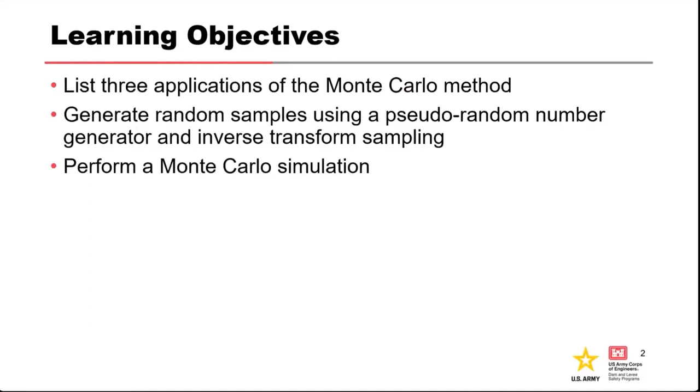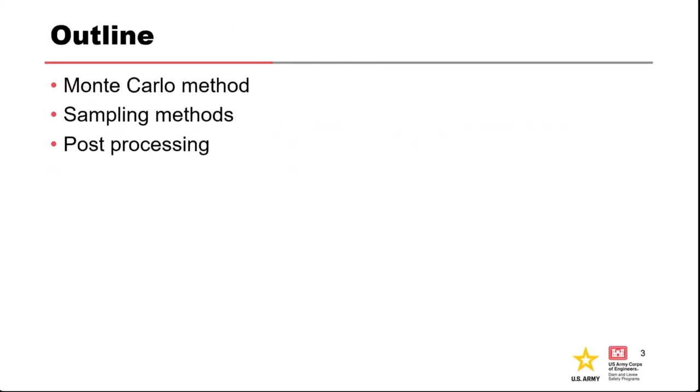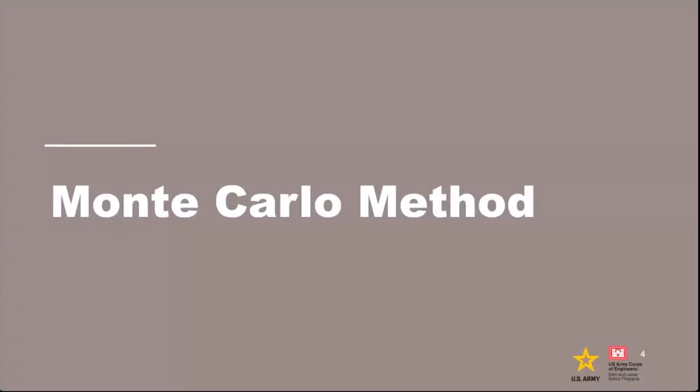A couple of objectives here. One is to get you familiar with three common types of problems we solve with the Monte Carlo method. We'll talk about some details on how it works — how we actually generate the random samples we need — and then how to actually do a Monte Carlo simulation, which you'll do in the exercise tomorrow. We'll cover the Monte Carlo method, some of the sampling methods we use, and then briefly discuss some thoughts and concepts related to post-processing results.